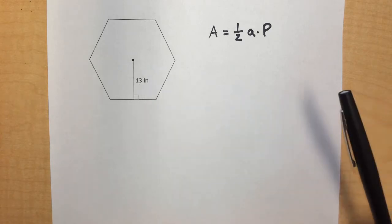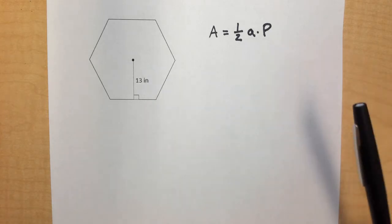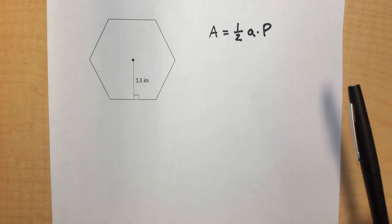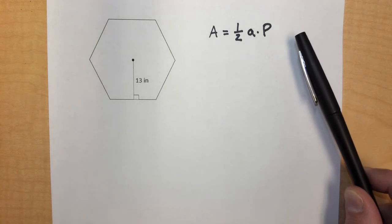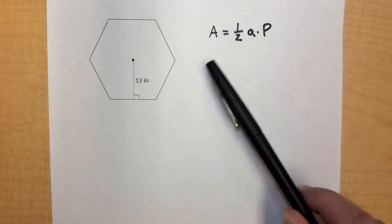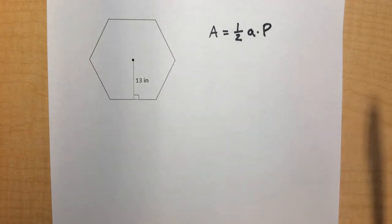In this case, we're given the apothem, so we're given part of the information that we can plug into our formula. But in order to solve for the area of the complete shape, we need to know what this perimeter is. And since we are not given any side lengths, well, guess what? We're going to have to solve for one of those side lengths.